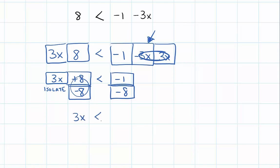So we are left with 3x is less than, when we put our negatives together, we get negative 9. If I split up my three x's into individual x's, I need to do the same to negative 9. I need to split it into three equal sections, which means each x is going to be less than negative 3.